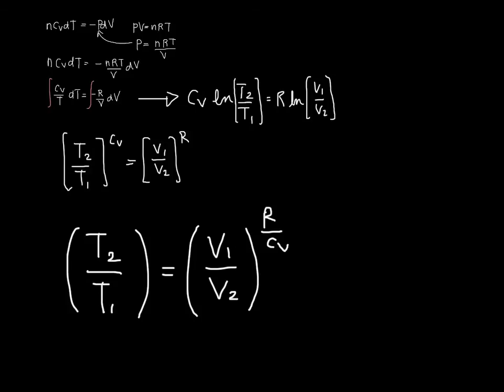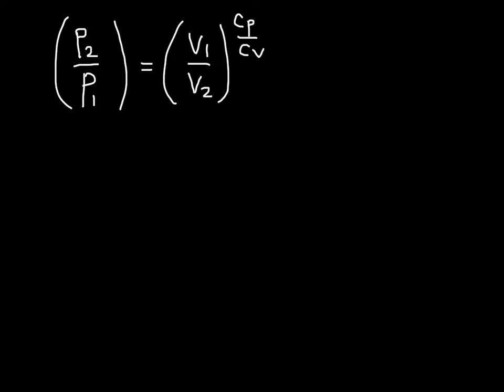It might not always be that you know the two temperatures and one of the volumes. But there are also relationships between the pressures and volumes in an adiabatic process. The ratio of pressures is related to the ratio of volumes. This is Cp divided by Cv. And if you have temperatures and pressures that you're working with, the relationship between those is given in this way.